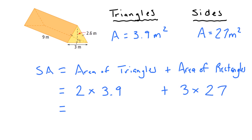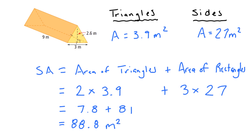So: 3.9 times 2 is 7.8, plus 3 times 27 is 81. When I add those together I get 88.8 meters squared. And that is how you find the surface area of a triangular prism.